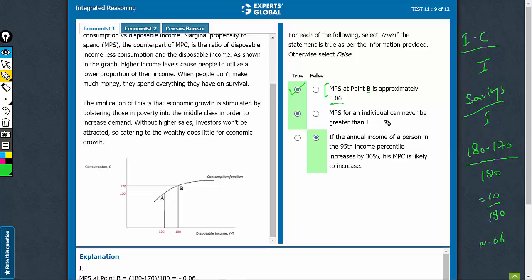The second one, MPS can never be greater than 1. So yes, it is in a way savings upon income, disposable income. Even if one ends up spending nothing, which is practically unlikely, the value would be 1, so it can never be greater than 1. This statement is absolutely correct.